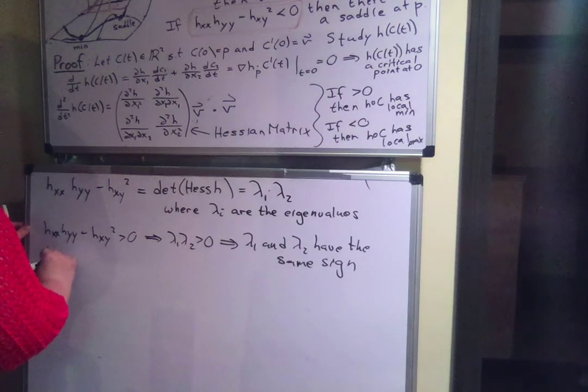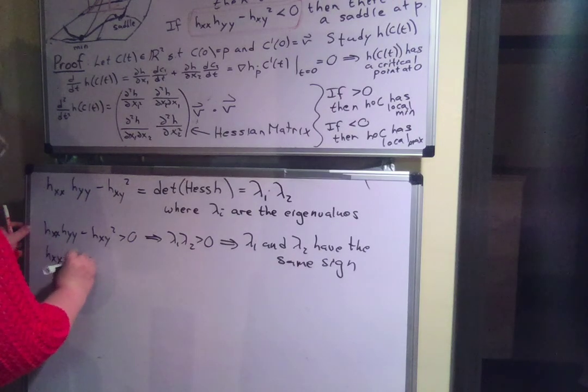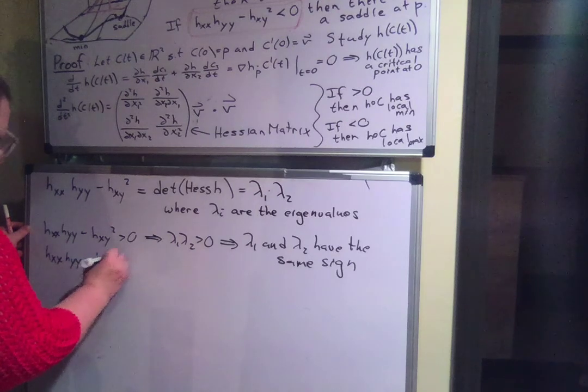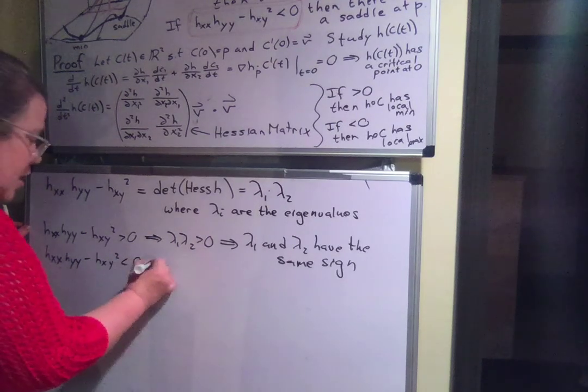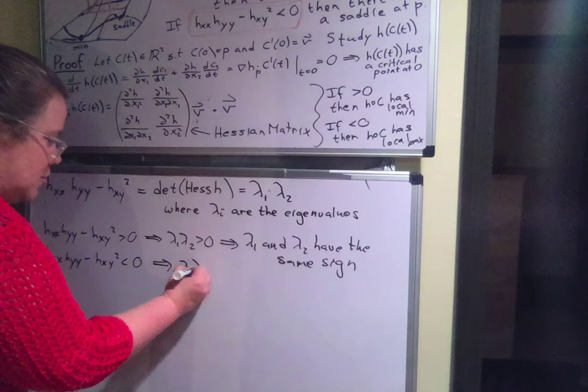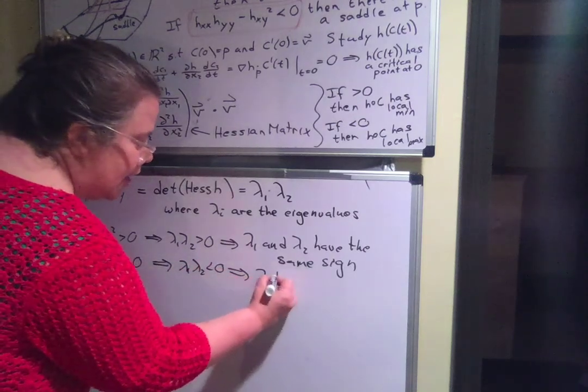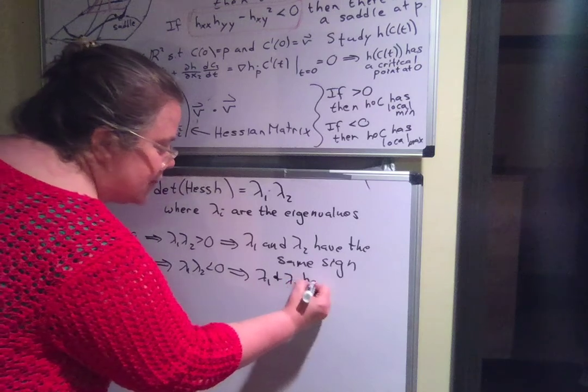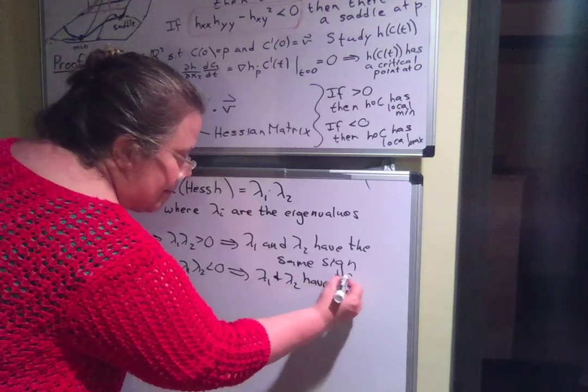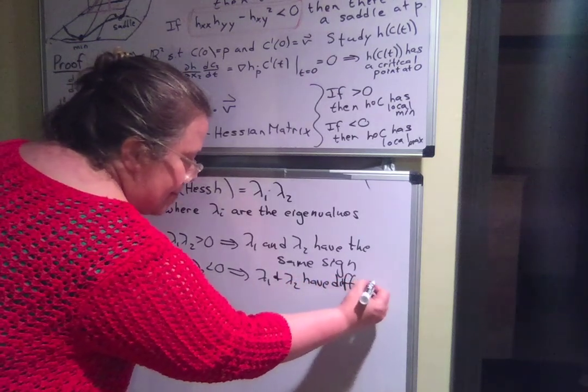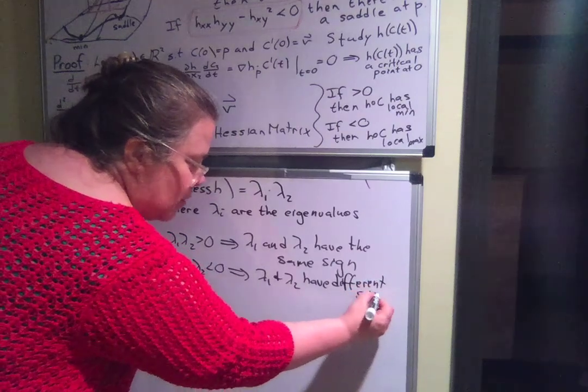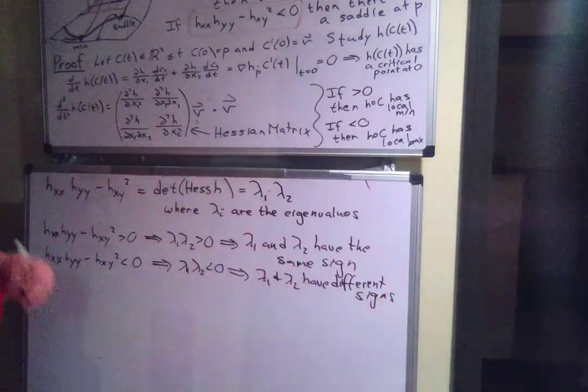And the condition HXX HYY minus HXY squared less than 0 implies that lambda 1 lambda 2 is less than 0, which implies lambda 1 and lambda 2 have different signs. One is positive and one is negative.